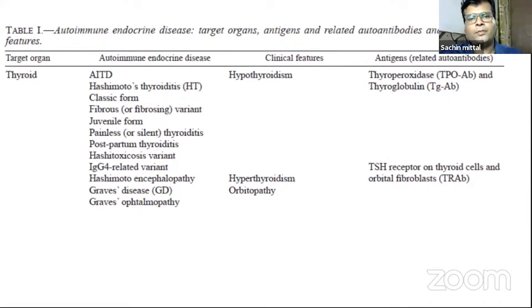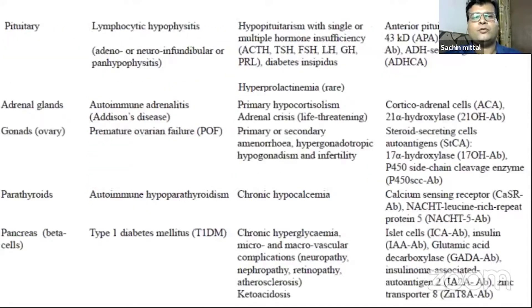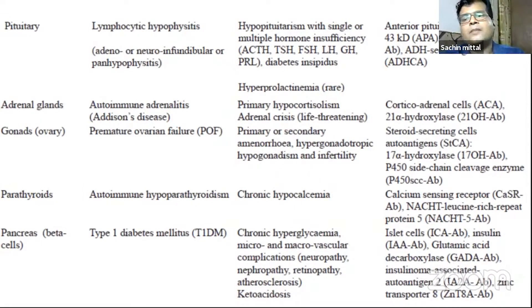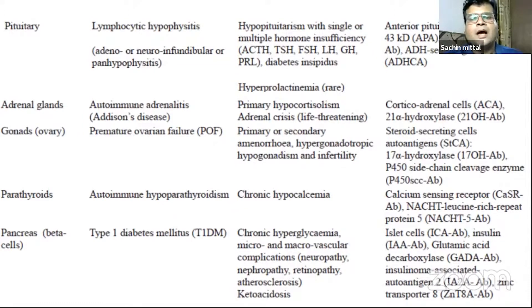With each target organ there are many antigens leading to the production of antibodies. We know about thyroperoxidase and thyroglobulin antibodies, and about TSH receptor antibodies involved in Graves' disease or Graves' orbitopathy. In the pituitary, there are a number of antibodies. In the adrenal glands, the Addison's 21-hydroxylase antibodies have a very high prognostic value for eventual development of Addison's disease. For parathyroid, calcium-sensing receptor antibodies are described. For type 1 diabetes, antibodies include GAD-65, islet cytoplasmic antigen, IA-2, and zinc transporter antibodies.